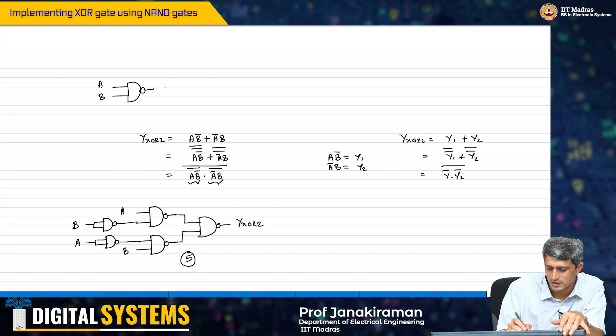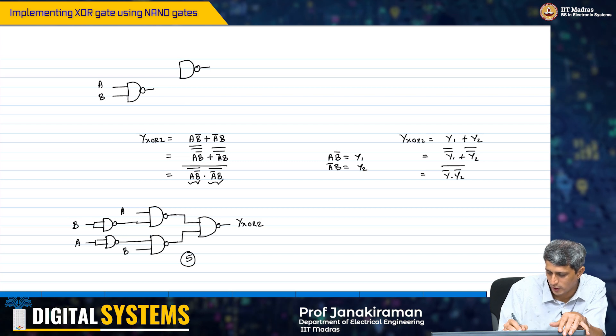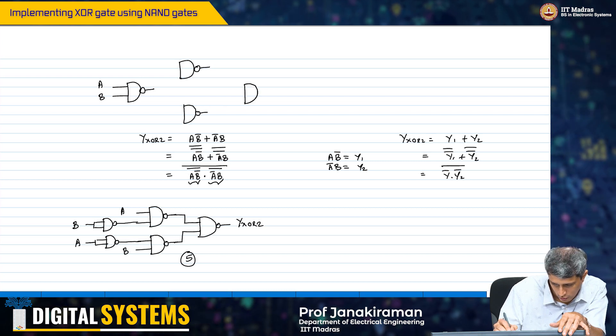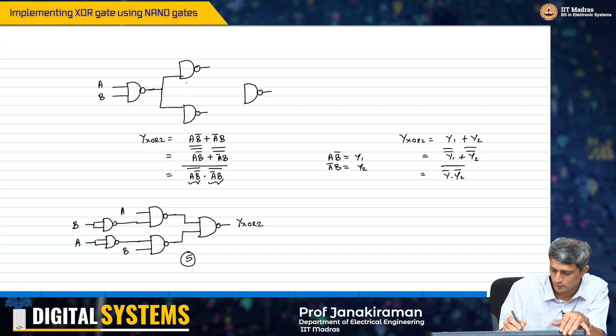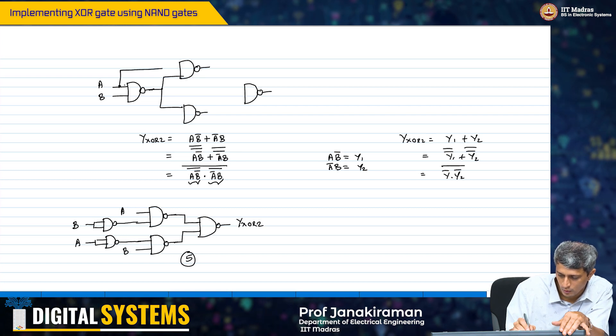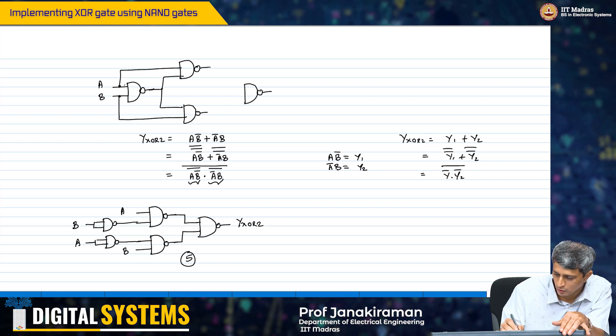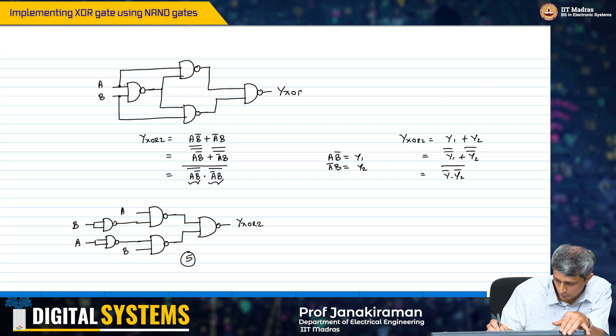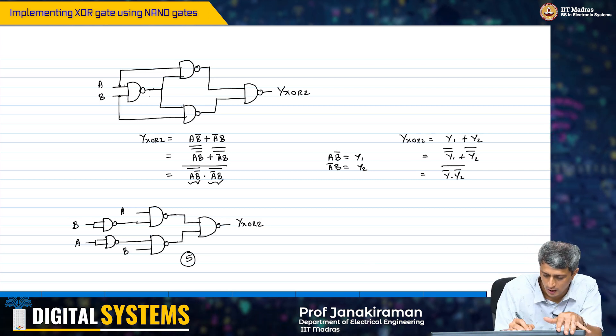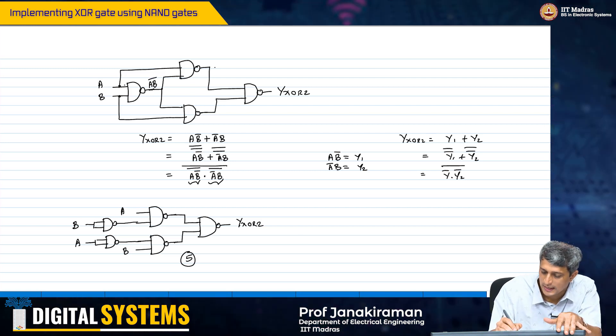It turns out there is a simpler implementation for this. You can do it with 4 NAND 2 gates. Y_XOR2. What happens here? You get AB whole bar and then you get AB whole bar and then you are NANDing again with this thing.